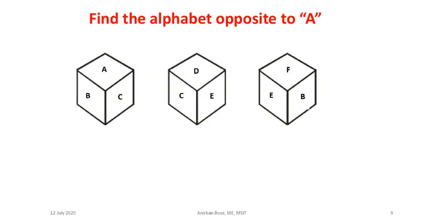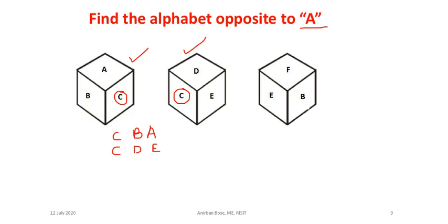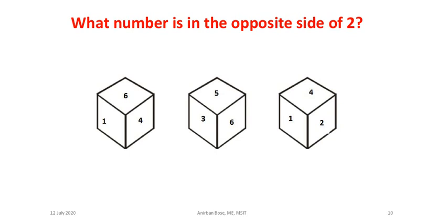Next problem: find the alphabet opposite to A. Comparing two dice, C is common. For the first die clockwise: C, B, A. For the second die clockwise: C, D, E. So B and D are opposite, A and E are opposite. Therefore the answer is E.